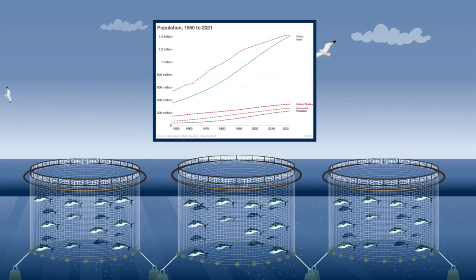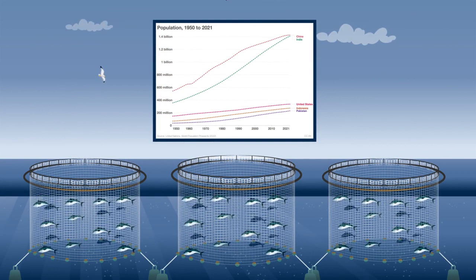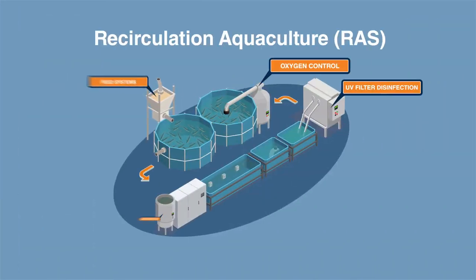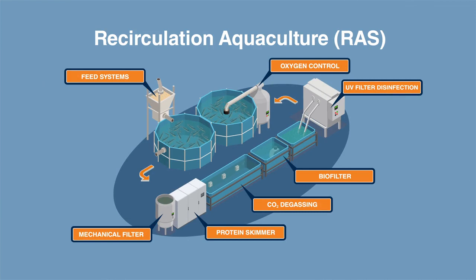Therefore, new environmentally friendly and sustainable technologies, like recirculating aquaculture systems (RAS), are replacing the declining traditional capture methods.